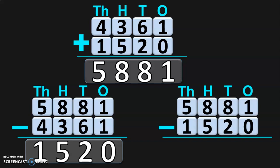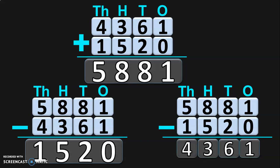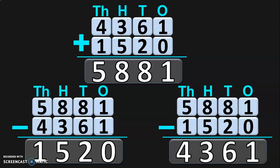Let us verify this also. What happens when we subtract 1520 from 5881? Write down the place values and begin the subtraction from the 1s place. 1 minus 0 is 1. 8 minus 2 in the 10s place is 6. In the 100s place, 8 minus 5 is 3. And in the 1000s place, 5 minus 1 is 4. So you get the other number 4361 when we take away 1520 from 5881.